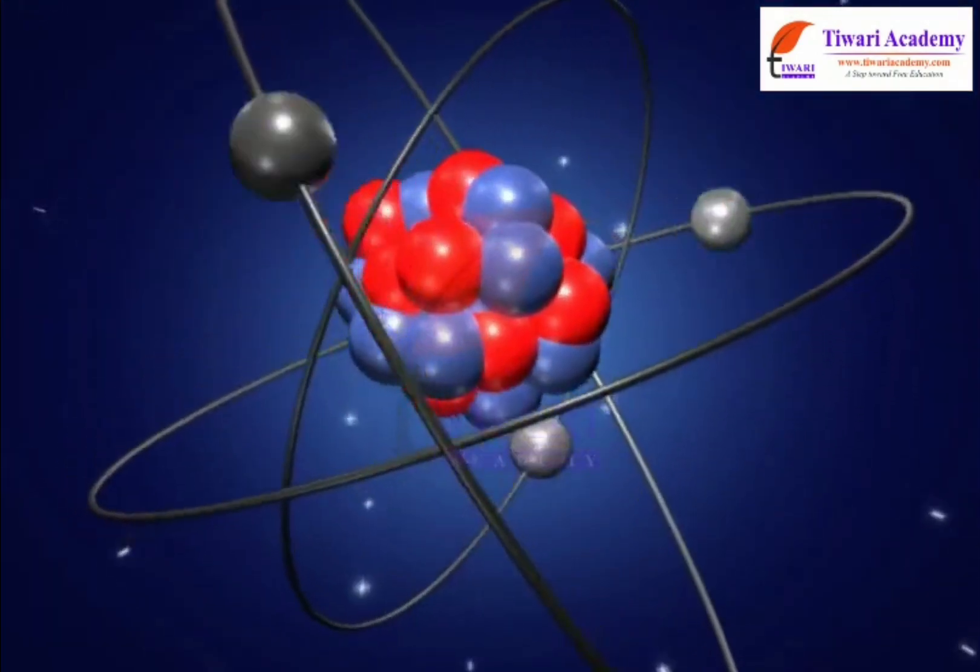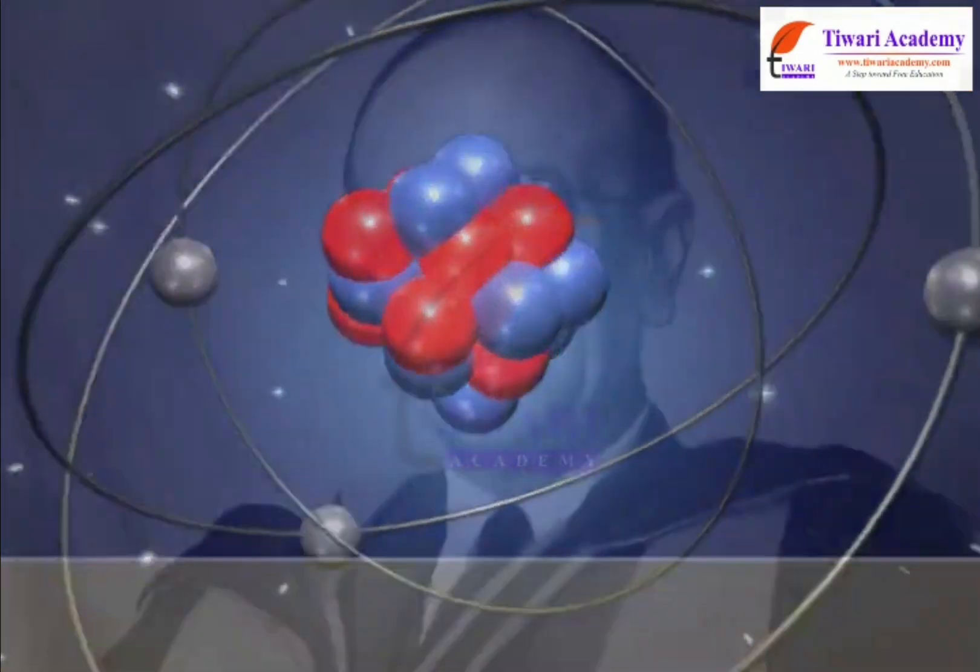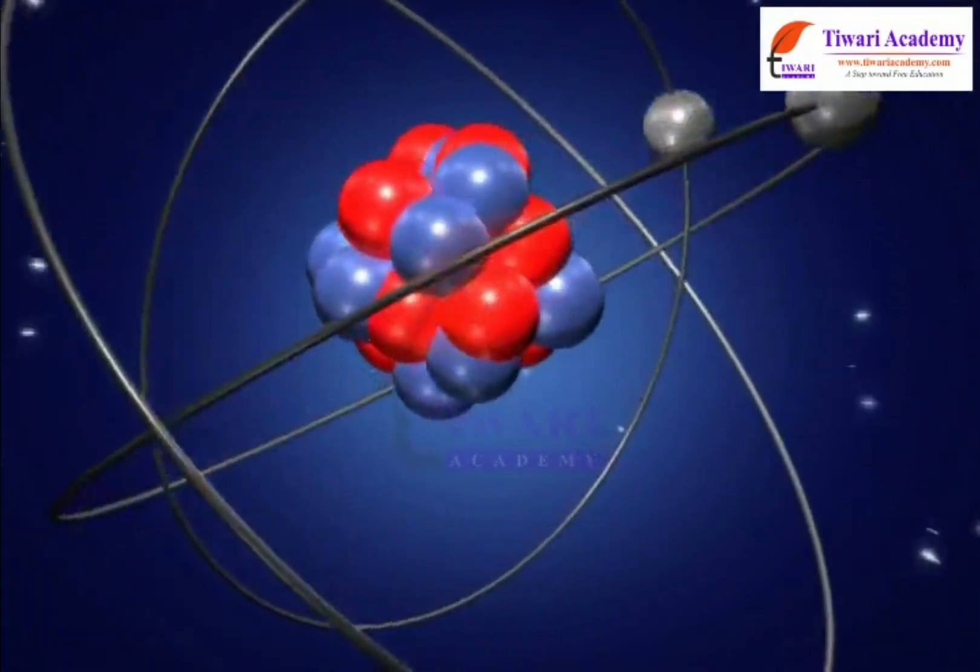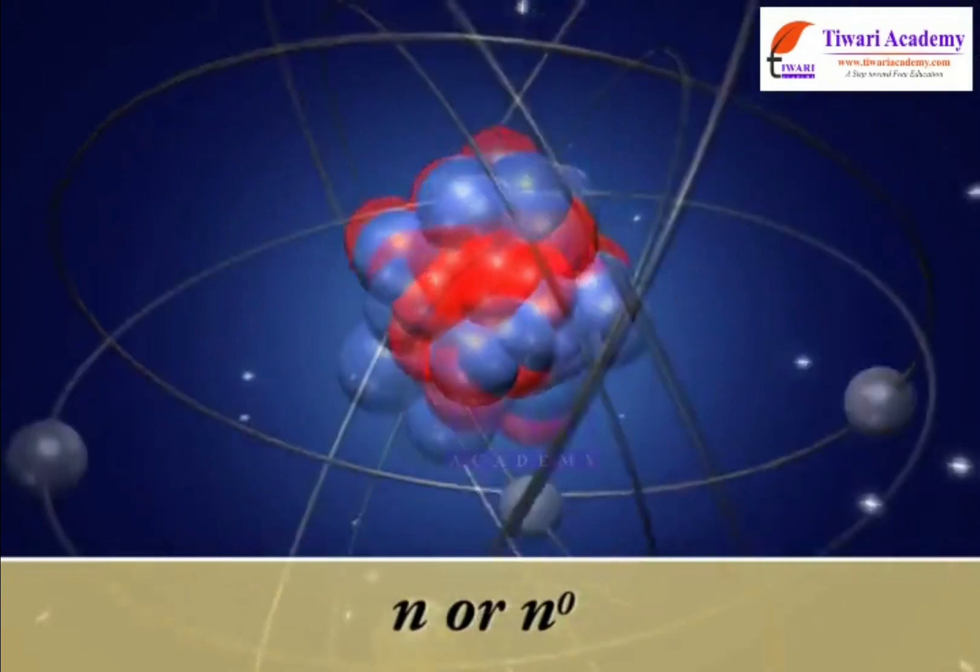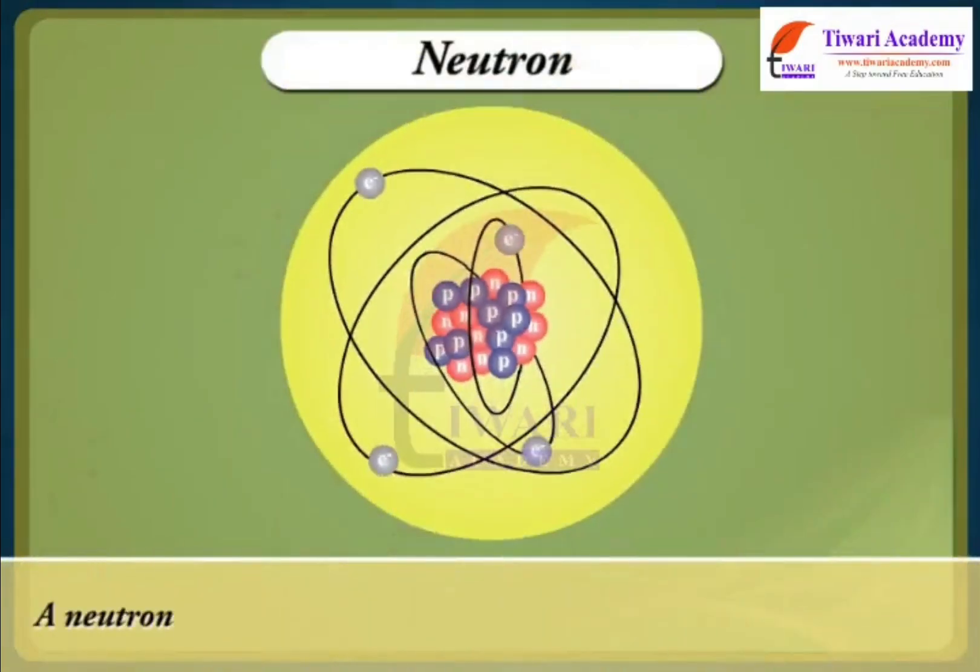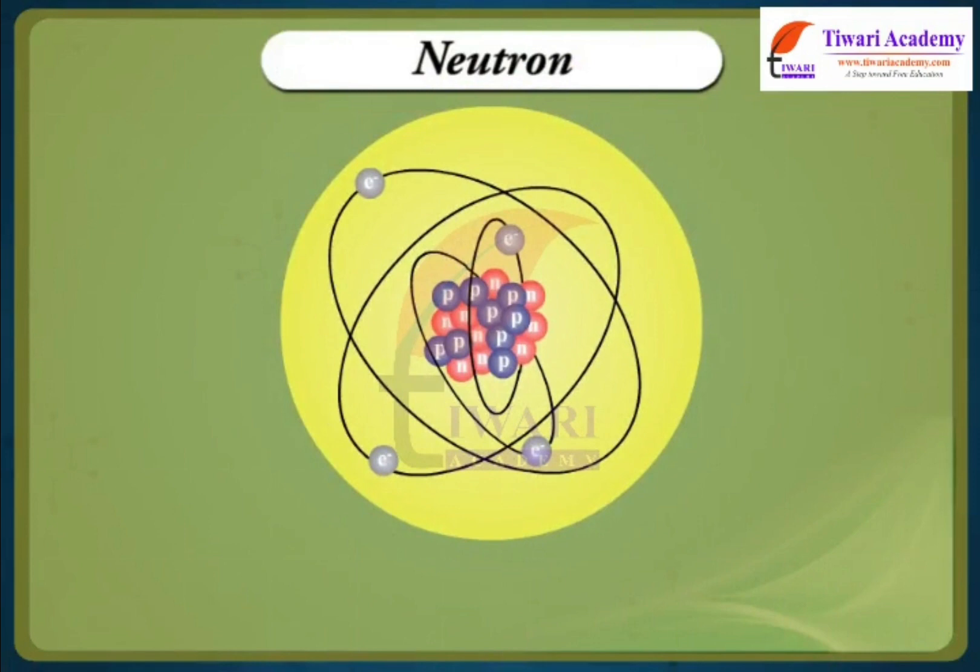Neutron was discovered by Chadwick. It is a subatomic particle which has the symbol N or N0. A neutron is one of the fundamental particles that make up matter. This uncharged particle exists in the nucleus of a typical atom along with its positively charged counterpart, the proton. Proton and neutrons each have about the same mass.